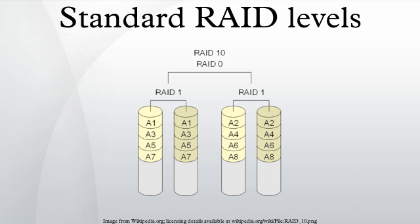RAID 2 stripes data at the bit level and uses a Hamming code for error correction. The disks are synchronized by the controller to spin at the same angular orientation, so it generally cannot service multiple requests simultaneously. Extremely high data transfer rates are possible. This is the only original level of RAID that is not currently used. All hard disks eventually implemented Hamming code error correction, making RAID 2 error correction redundant and unnecessarily complex. This level quickly became useless and is now obsolete. There are no commercial applications of RAID 2.